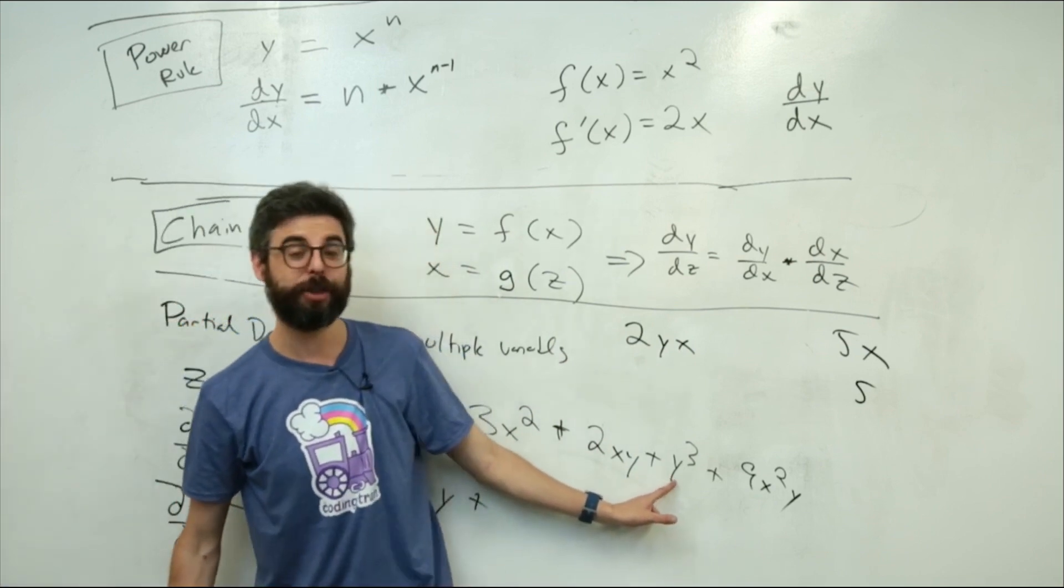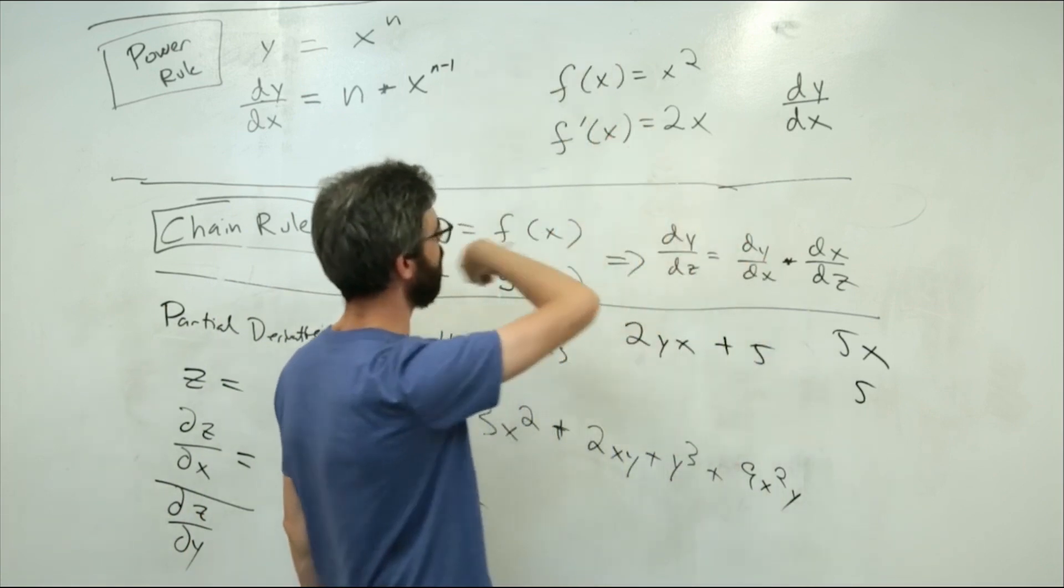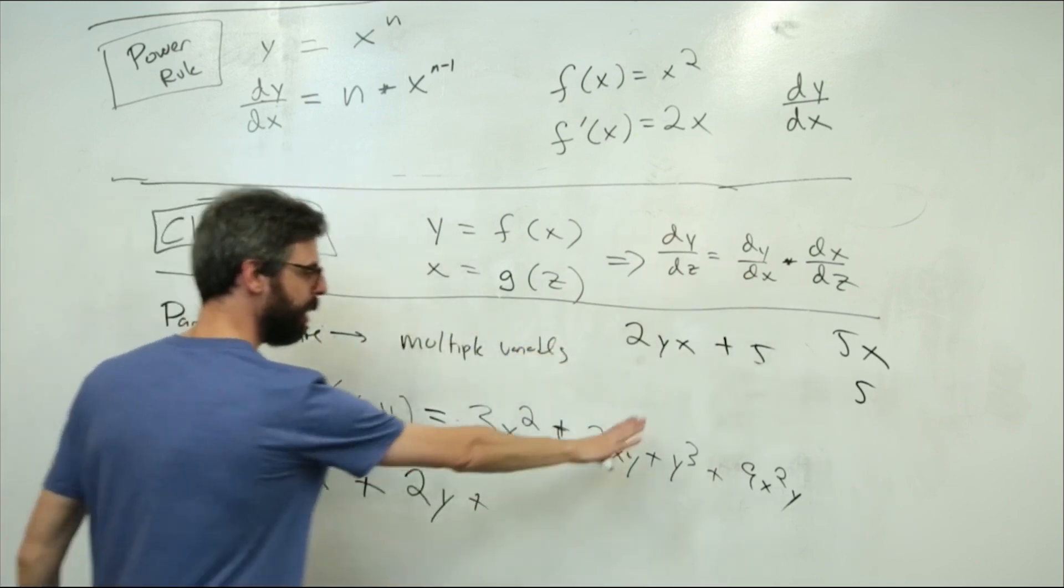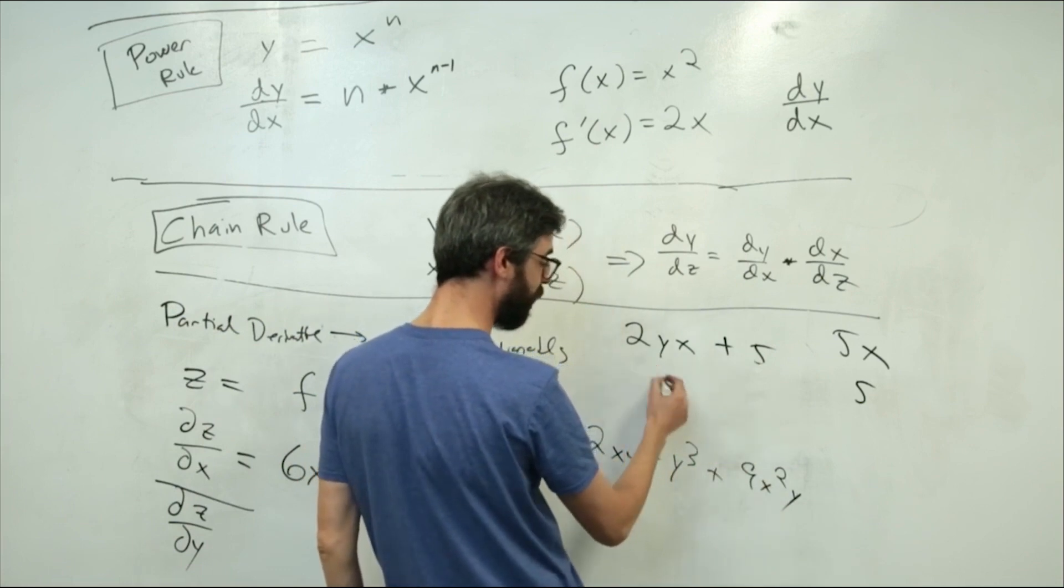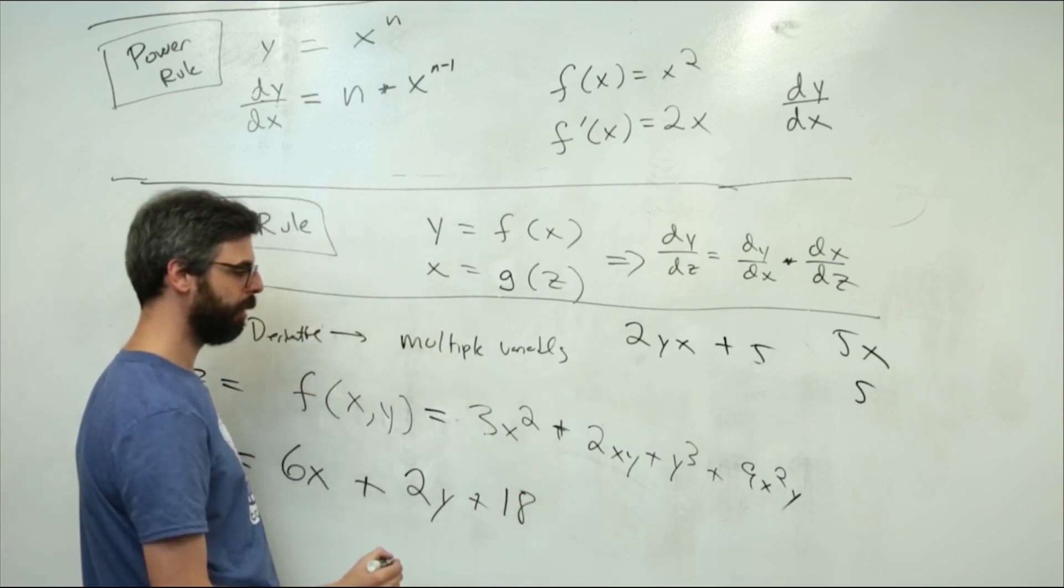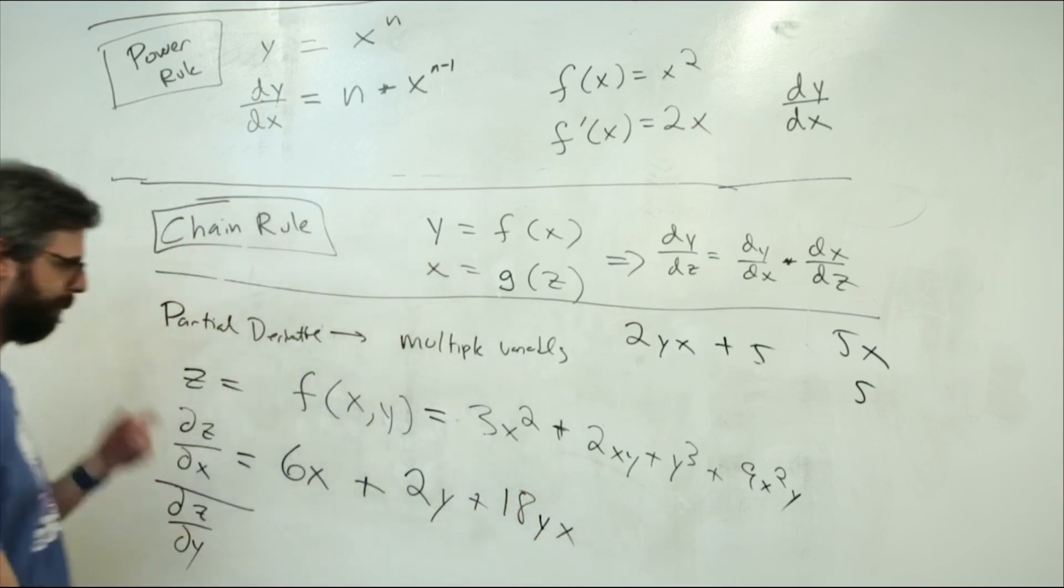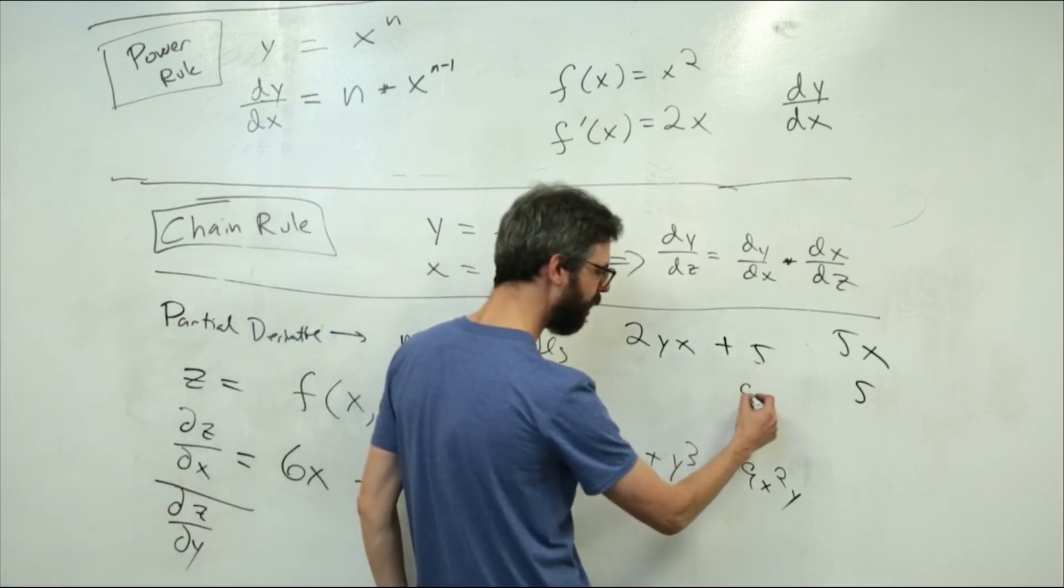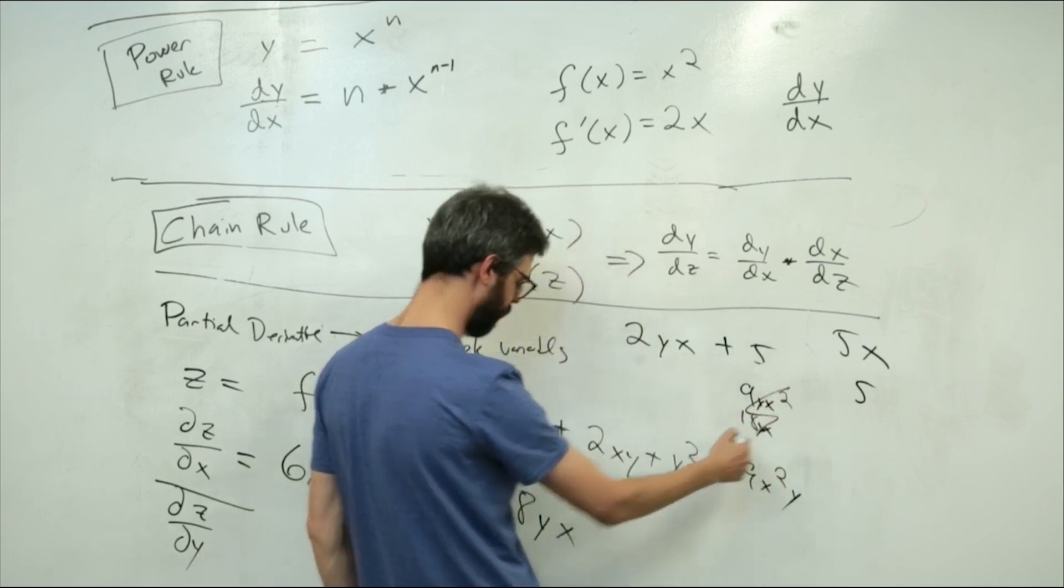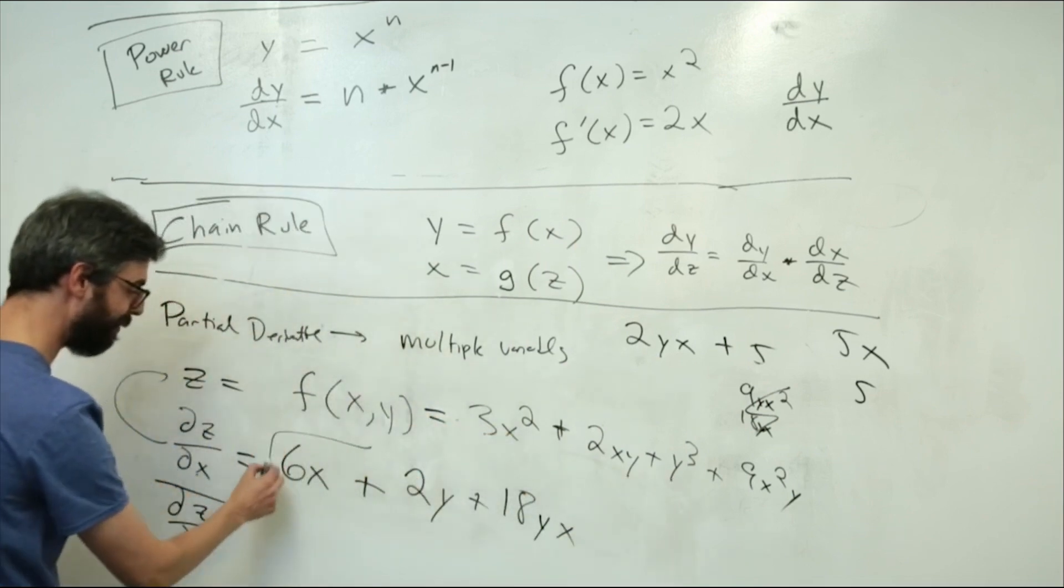So 6x plus 2y plus, now here's a tricky one, y cubed. You think, oh, well, it's a constant, so it stays as y cubed, but it's not. What if I have just a value like 5, the derivative of that would be 0. So this goes away, and then this is the same thing. This is now the equivalent of 9 times y times x squared. So that is 2 times 9, 18 times 18yx, right? Because if I just had a constant, 9x squared, I would have 18x. So 9yx squared is 18 times yx. So this is now the partial derivative relative to x. I treat y as if it's a constant, and I have this as the derivative.